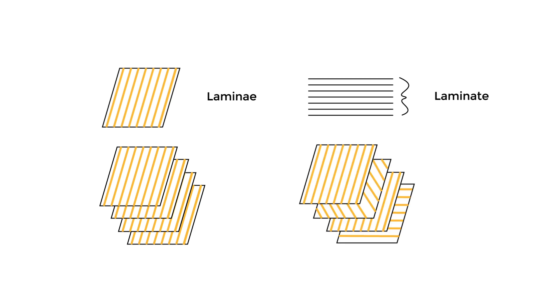Or, I could rotate my lamina by some angle to get a more isotropic laminate composite, at least in this direction.